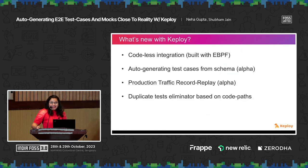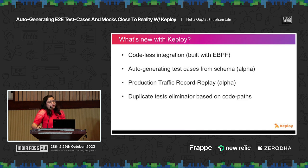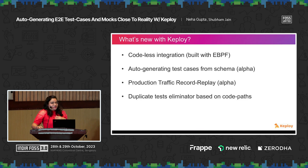For some familiar faces from last year: what we changed is that earlier we used to have an SDK where users had to integrate it and wrap their dependencies — there was code change. But we came up with a new codeless integration approach built with eBPF technology, so you don't have to make any code changes now; we just capture all the calls at the network level. We also created auto-generation of test cases, which was high in demand: if you have an OpenAPI schema, can Keploy just generate all possible test scenarios and bombard them to your application? That's currently in alpha.